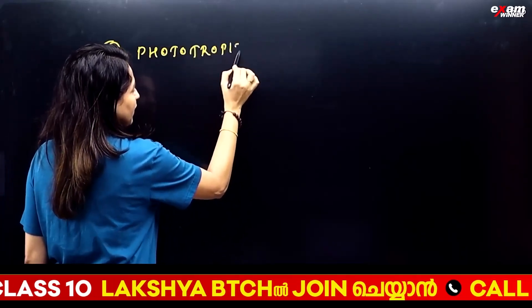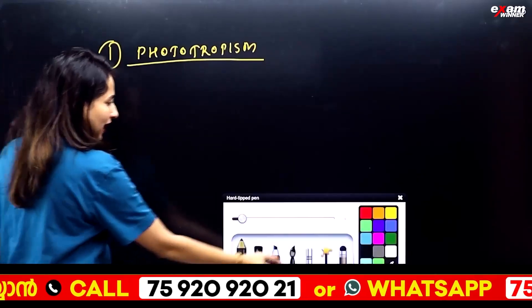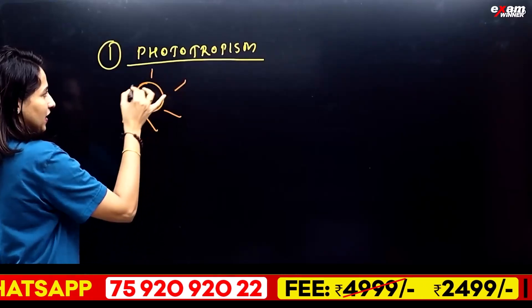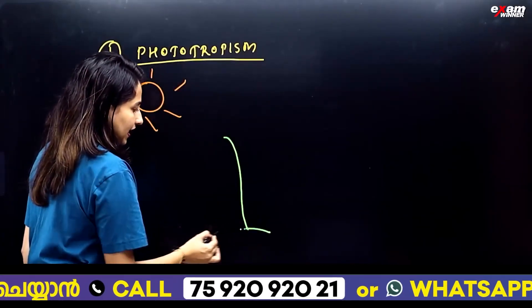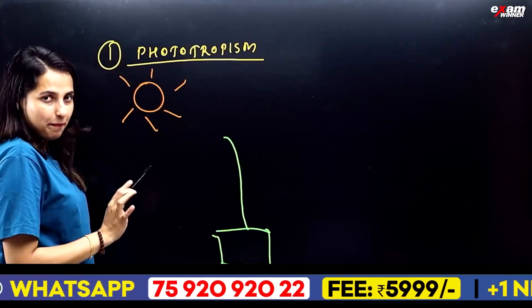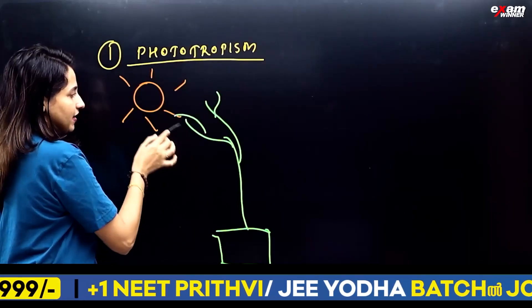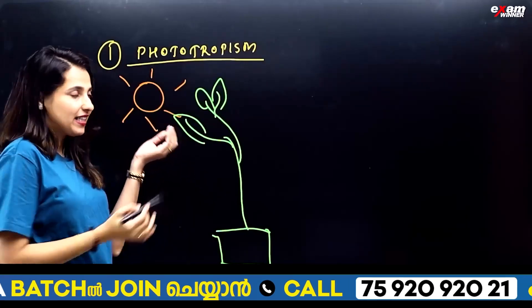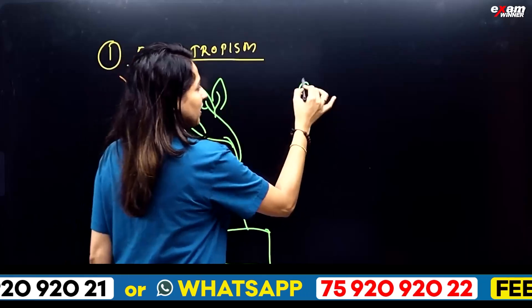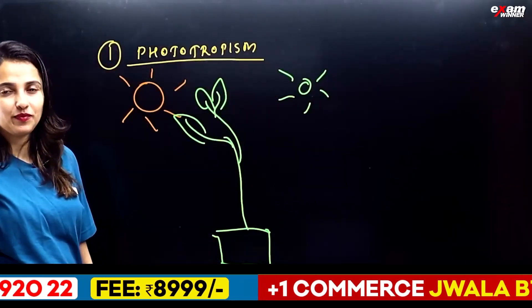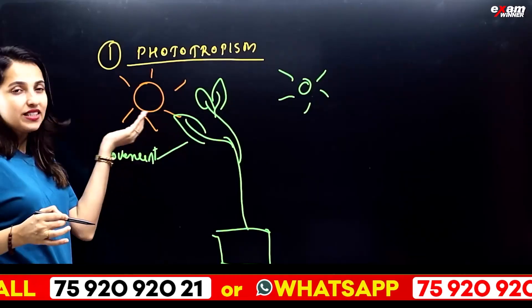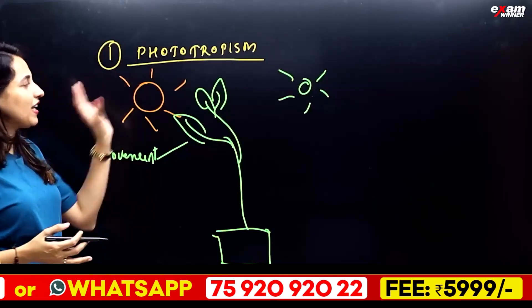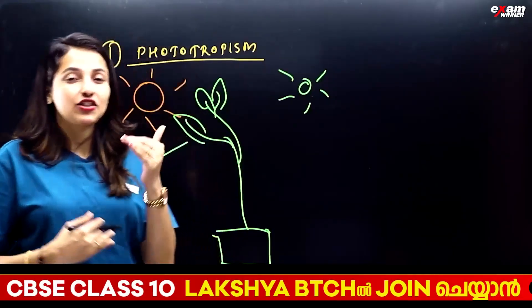Phototropism — if we observe plants, the stem moves towards the light source. If we call it light, we move towards light. If we change the light direction, the stem follows the sun. So the movement is growth dependent, and movement is towards the stimuli. We call it phototropism: the light direction is the movement direction.